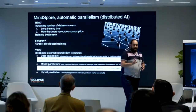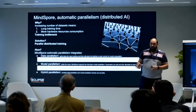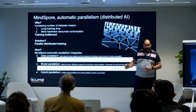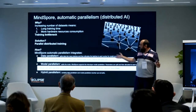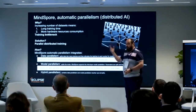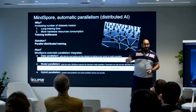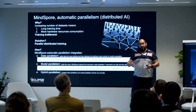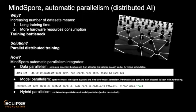A key feature in MindSpore is automatic parallelism. With large datasets, we see more and more training time, consuming a lot of resources and creating a training bottleneck. A possible solution is to distribute the training across multiple executors, and that's exactly what MindSpore does — at three potential levels.